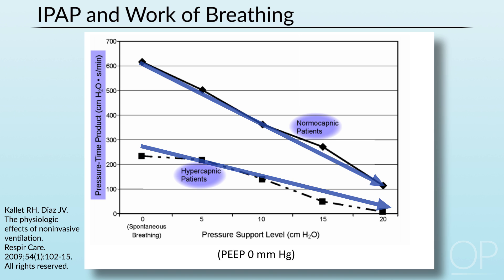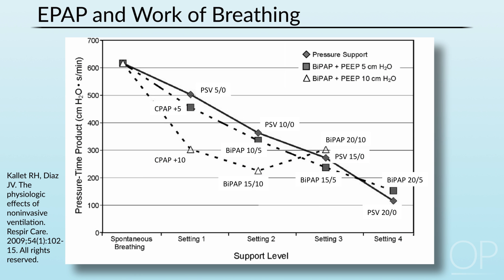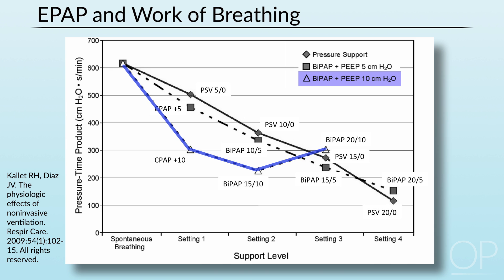This was a linear relationship. Studying the effect of EPAP, we again see the solid black line representing IPAP alone, with two additional curves: squares representing patients supported with BiPAP and PEEP of 5, and triangles with PEEP of 10. With increases in EPAP, work of breathing is again reduced until EPAP reaches approximately 10, at which point little is gained from increasing it further.